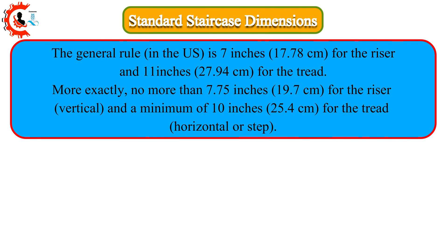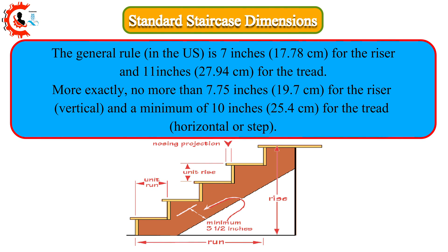Standard Staircase Dimensions. The general rule in the US is 7 inches (17.78 cm) for the riser and 11 inches (27.94 cm) for the tread. More exactly, no more than 7.75 inches (19.7 cm) for the riser (vertical) and a minimum of 10 inches (25.4 cm) for the tread (horizontal or step).